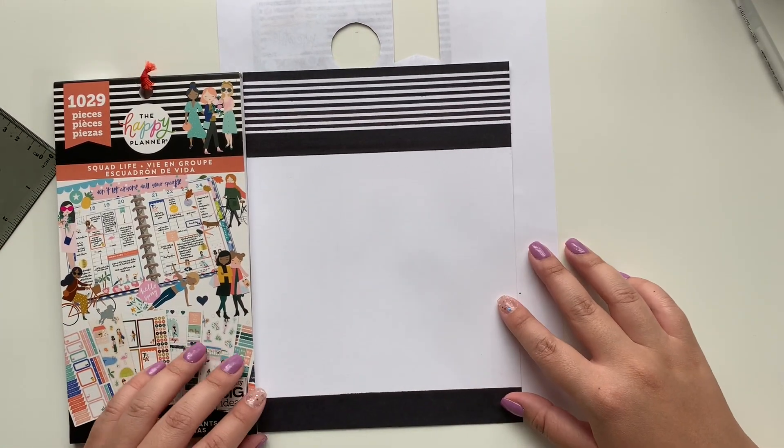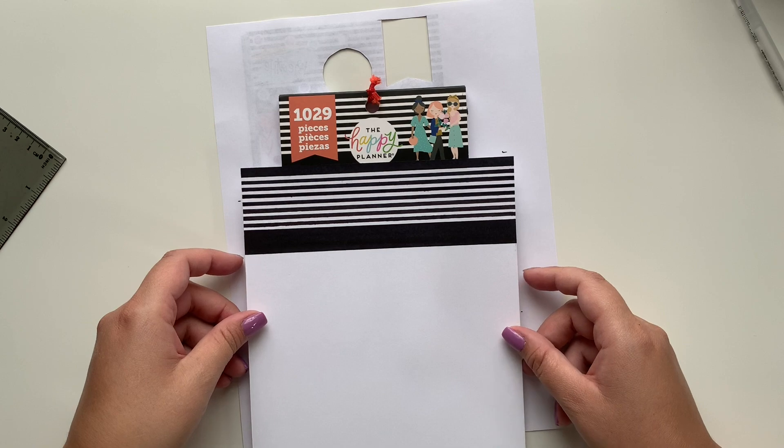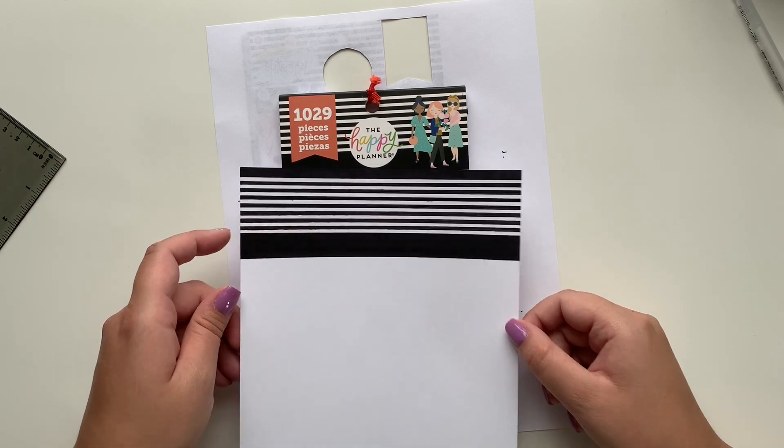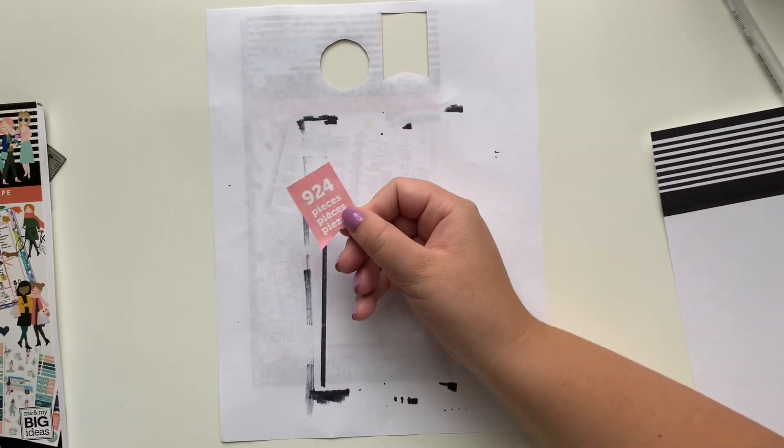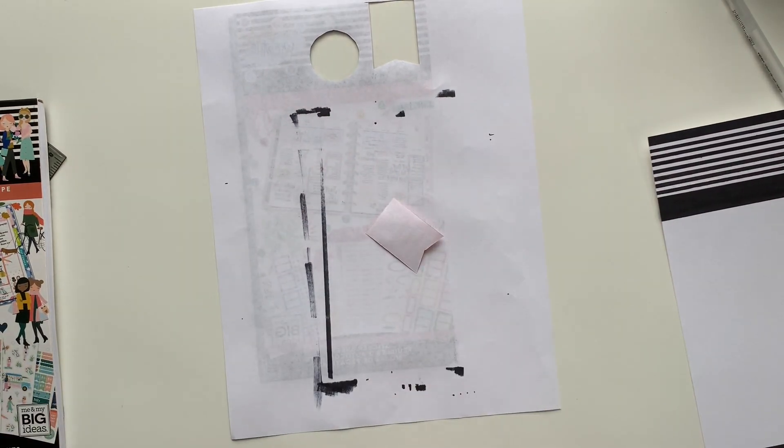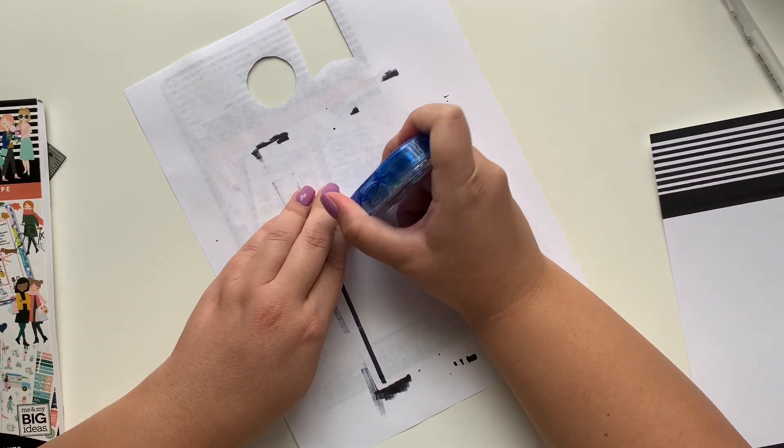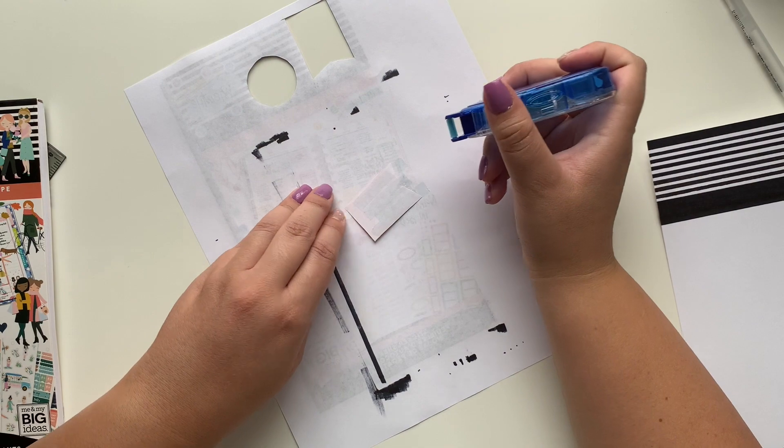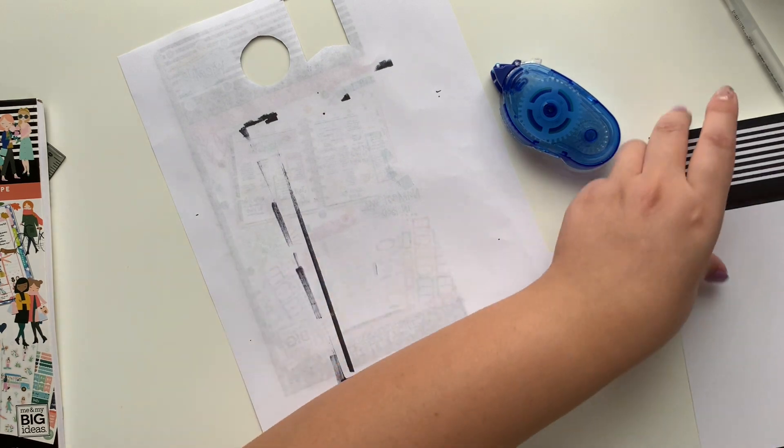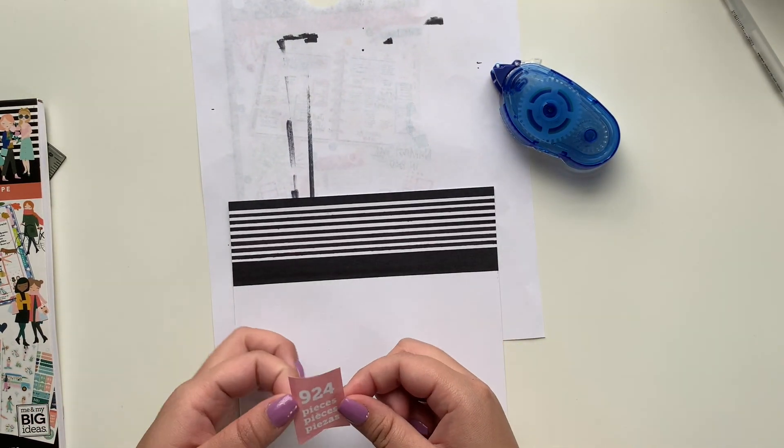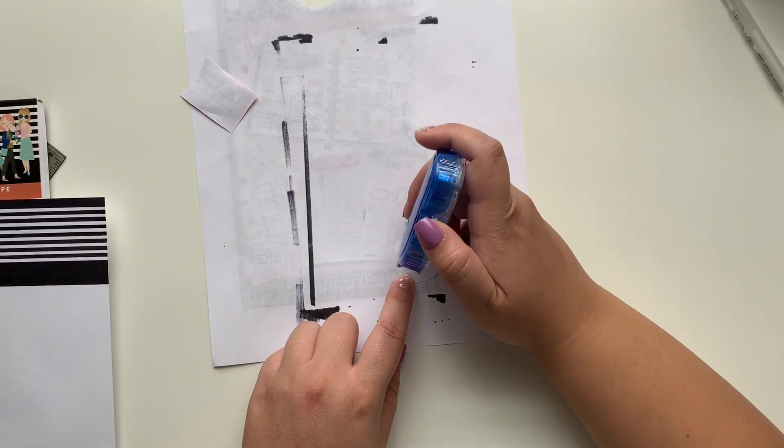Once we were done with all of our black lines, I went ahead and measured everything against my sticker book, like where I wanted the Happy Planner logo to be placed. In the original cover that I did, I actually put a hole punch to match the sticker book exactly, but in this one since it's a cover and you're not going to be able to see all the way through, I thought maybe not. I went ahead and used some Tombow adhesive or roll adhesive for this part for a little flag and our logo.